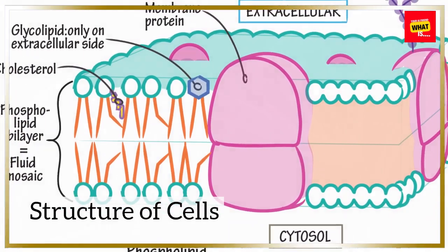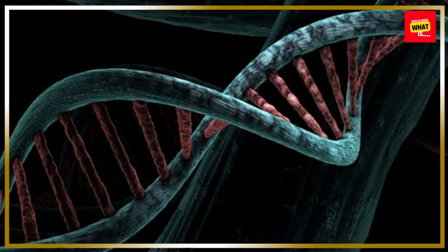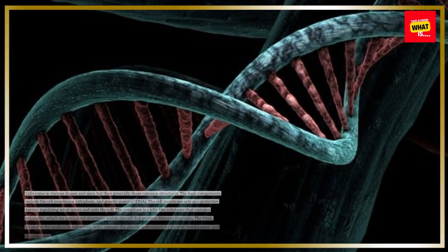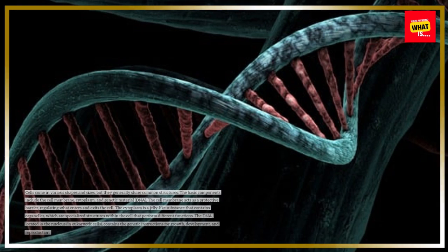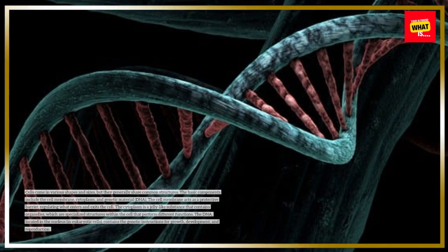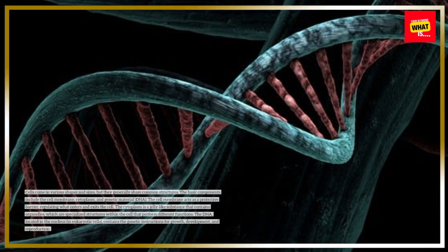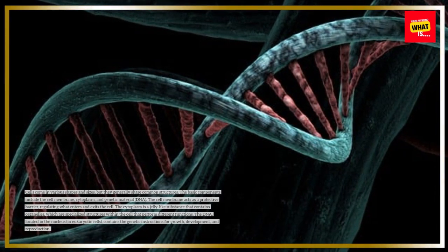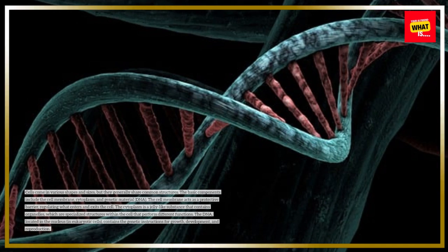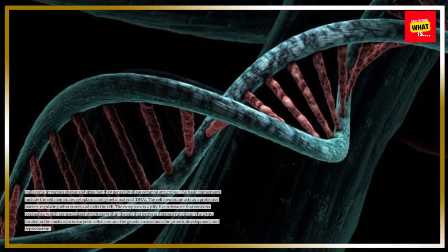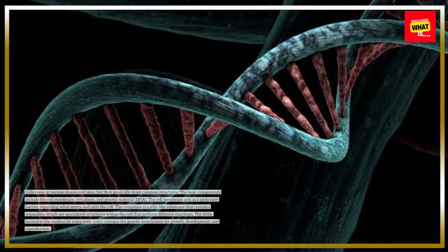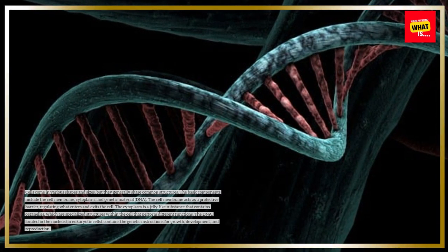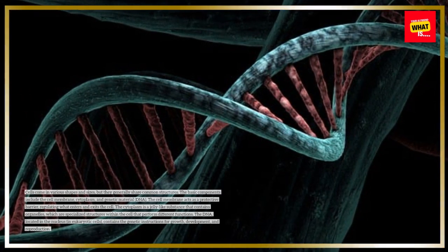Cells come in various shapes and sizes, but they generally share common structures. The basic components include the cell membrane, cytoplasm, and genetic material, DNA. The cell membrane acts as a protective barrier, regulating what enters and exits the cell. The cytoplasm is a jelly-like substance that contains organelles, which are specialized structures within the cell that perform different functions.